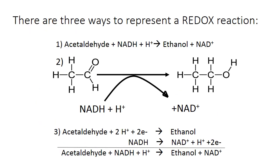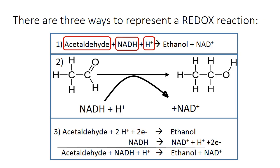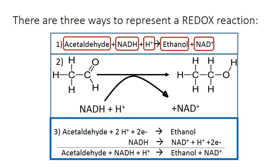There are three ways of representing redox reactions, which are shown here. This is the same reaction written in all three ways. The reactants are acetaldehyde, NADH, and a proton. The products are ethanol and NAD+.